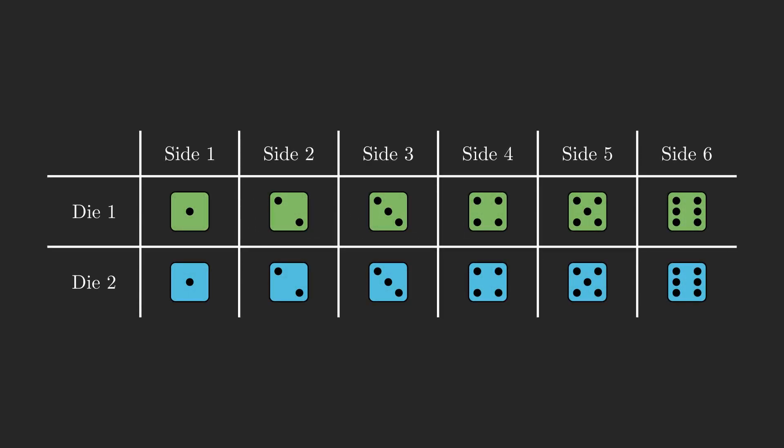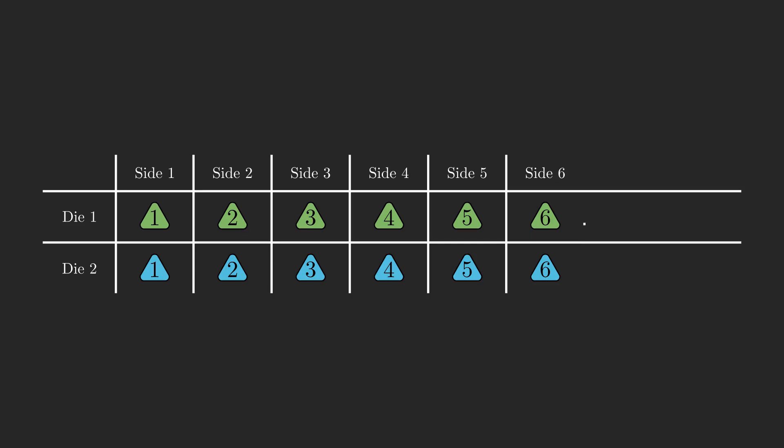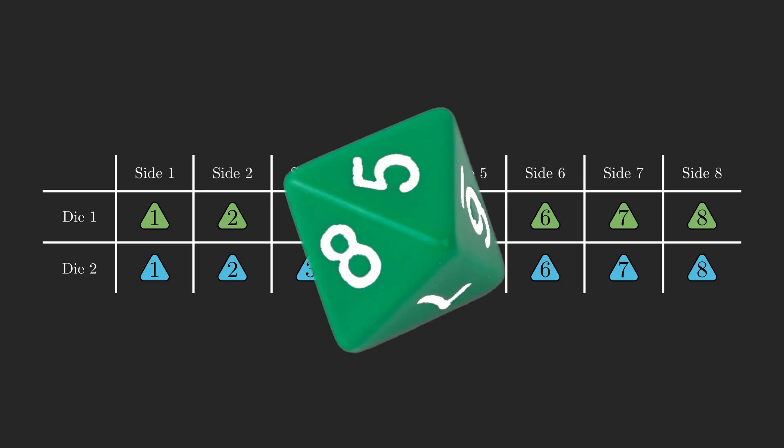My challenge to the viewers is quite simple. We're going to add 2 more sides to each die, and ask the same question. So here we have a normal pair of 8-sided dice, each side is labeled 1 through 8. And for those of you curious, yes, you can make these dice in real life, each side is in the shape of a triangle.